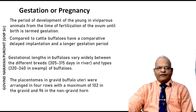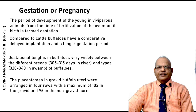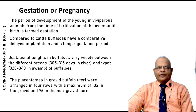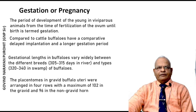As compared to cattle, buffaloes have a comparatively longer gestation period with delayed implantation. The gestational length in buffaloes varies widely between different breeds: 305 to 315 days in river buffaloes and 320 to 340 days in swamp buffaloes. The placentomes of gravid buffalo uteri were arranged in four rows, with a maximum of 102 in the gravid horn and 96 in the non-gravid horn. For more details, refer to 'Gestation and Fetal Development in the Buffalo' at the International Veterinary Information Service.